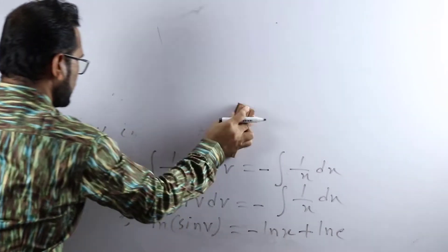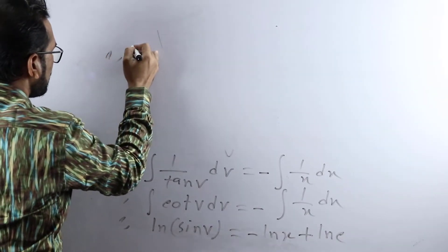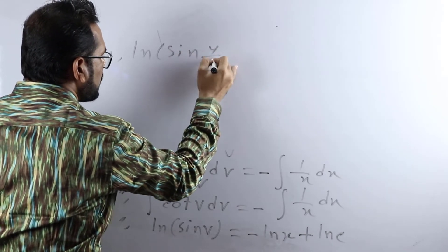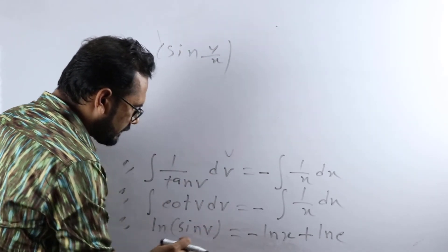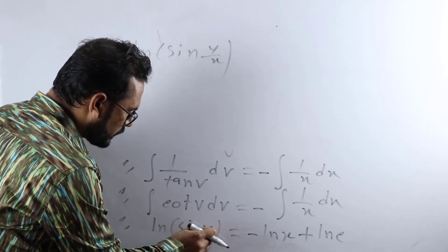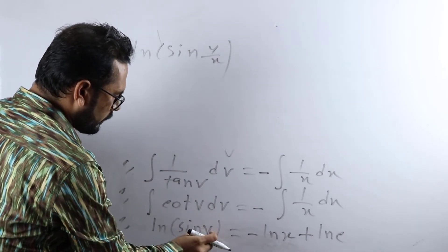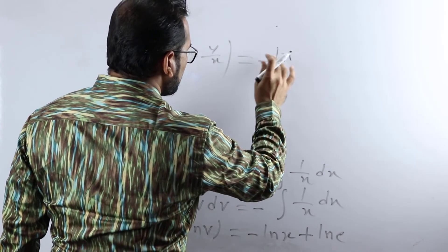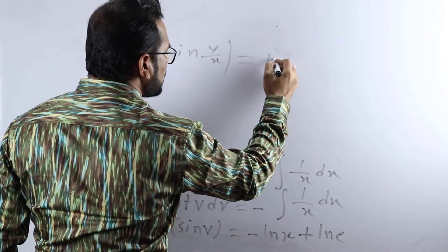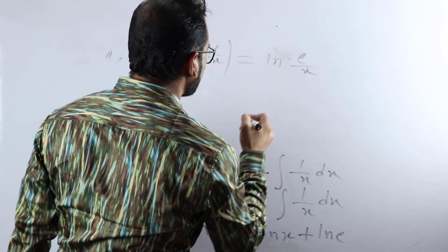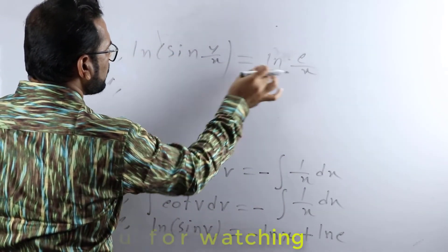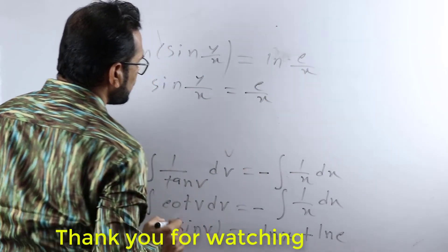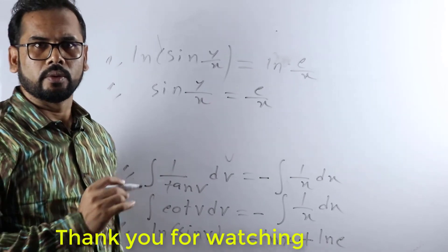Now substituting back v equals y/x, we get ln|sin(y/x)| equals minus ln(x) plus ln(c). Taking ln as a common term on the right side, this becomes ln|sin(y/x)| equals ln(c/x). Cancelling ln from both sides, we obtain sin(y/x) equals c/x. This is our solution to the given differential equation.